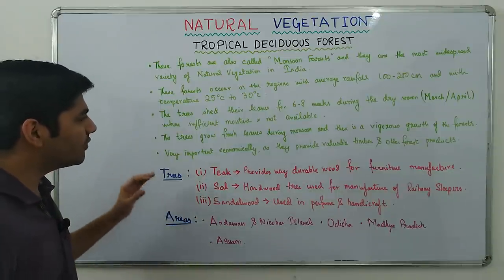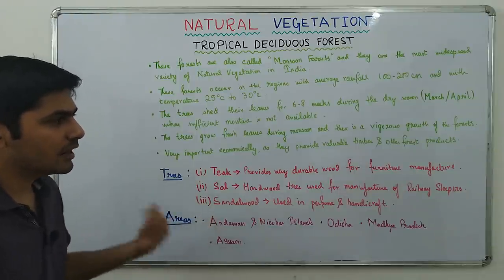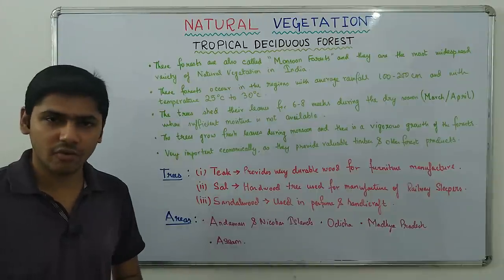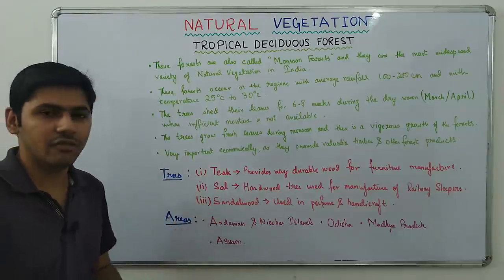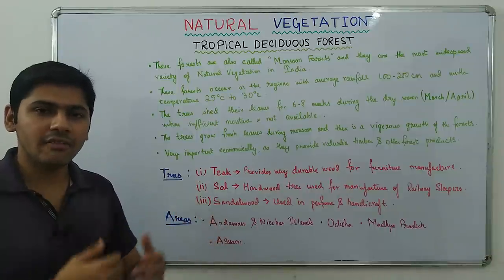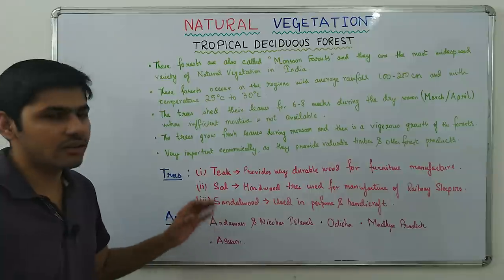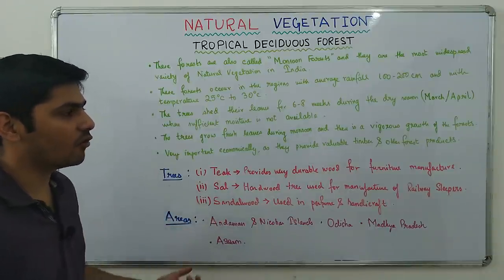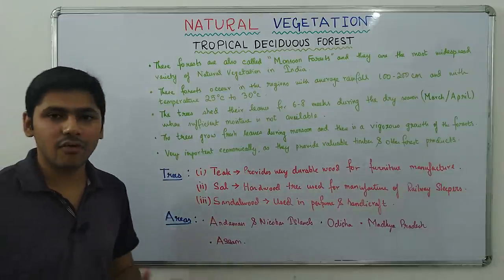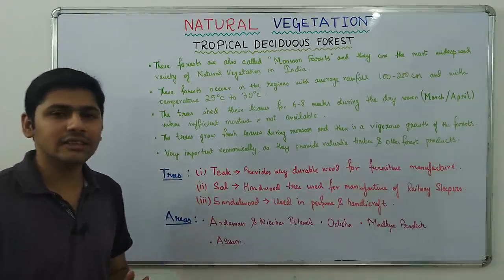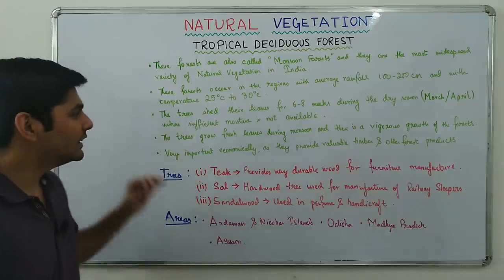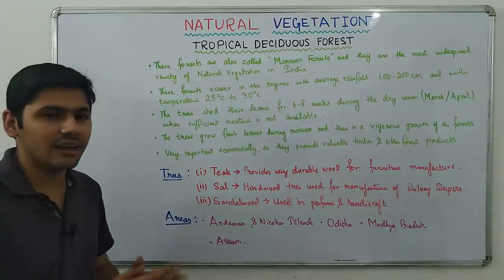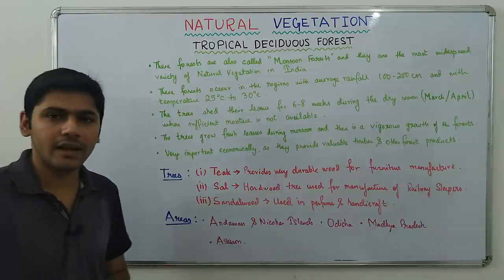After the dry season, monsoon arrives and water is available in plenty. The trees grow fresh leaves and there is vigorous growth of the forests. These forests are very important economically as they can be exploited — unlike Tropical Evergreen Forests — because there is no thick undergrowth and transport facilities are available. They provide valuable timber for construction and other forest products.